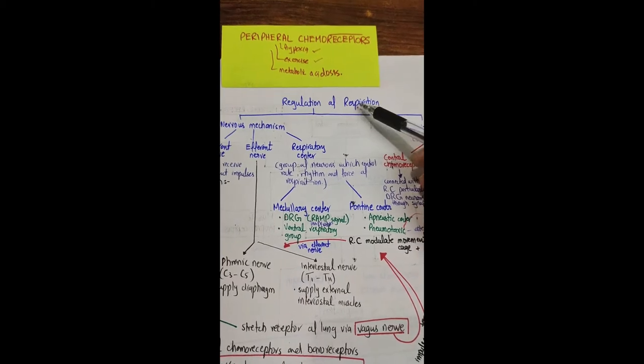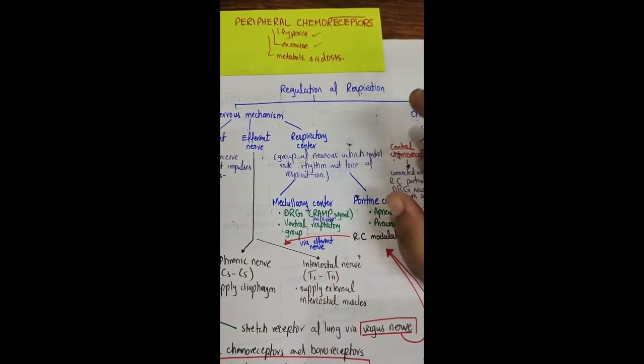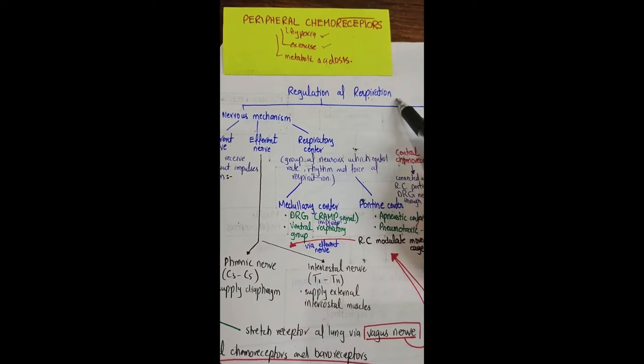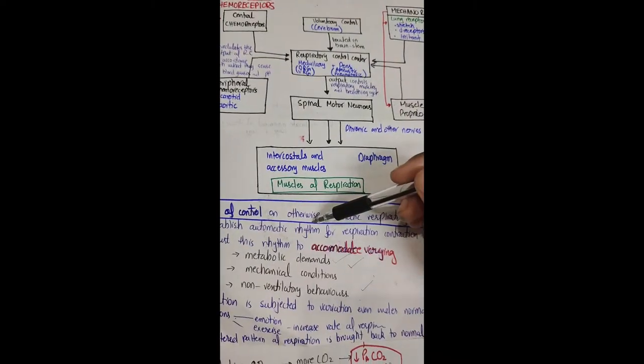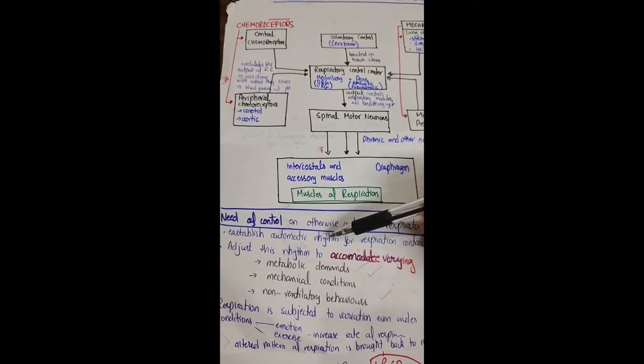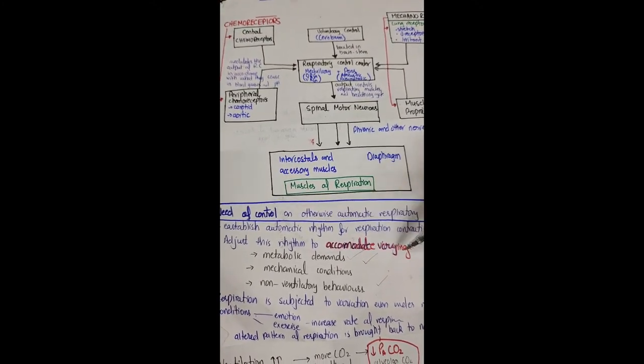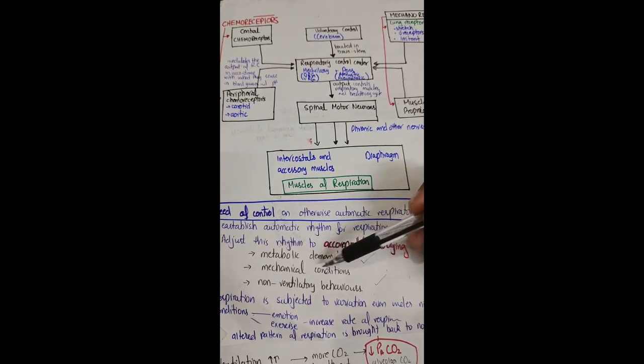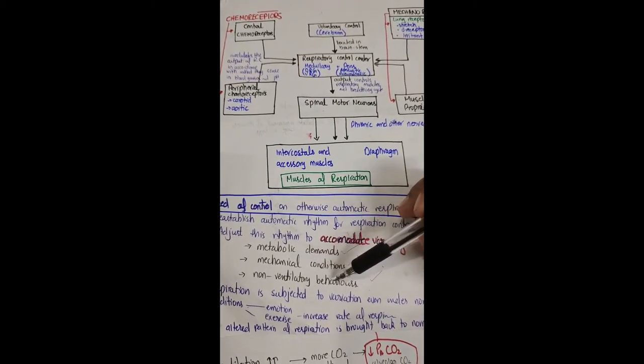So respiration is an otherwise automatic process, but there is need to regulate this automatic process so that we can establish an automatic rhythm. By this regulatory mechanism an automatic rhythm is established that can accommodate varying metabolic demands, mechanical conditions and also non-ventilatory behaviors.